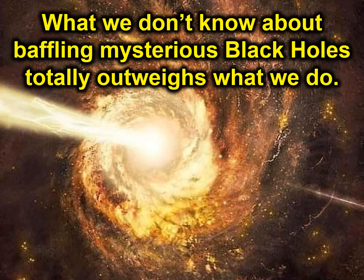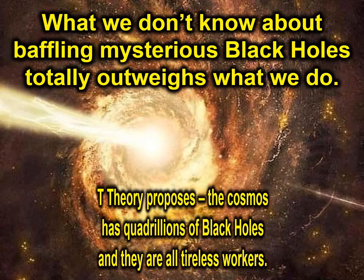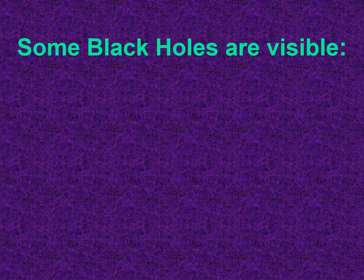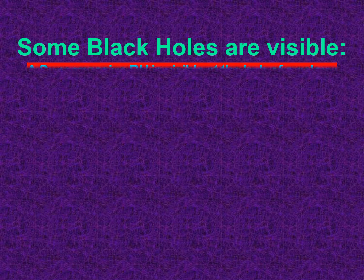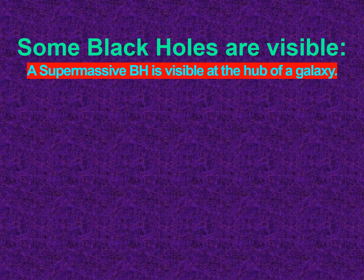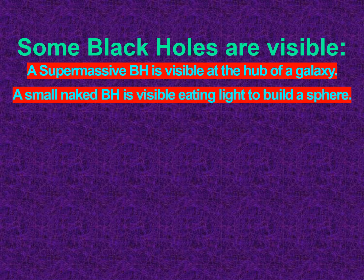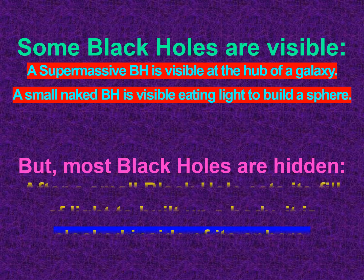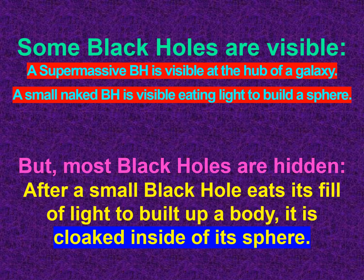What we don't know about baffling, mysterious black holes totally outweighs what we do. Trillion Theory proposes the cosmos has quadrillions of black holes and they are all tireless workers. Some black holes are visible, such as a supermassive black hole visible at the hub of a galaxy, and a naked black hole is visible eating light to build a sphere. But most black holes are hidden — after a black hole eats its fill of light to build up a body, it is cloaked inside of its sphere.